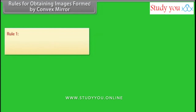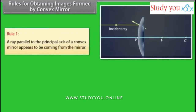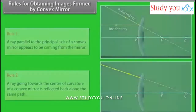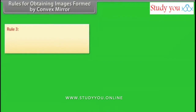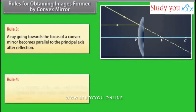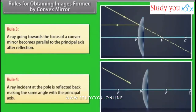Rules for obtaining images formed by convex mirrors: Rule 1: A ray parallel to the principal axis of a convex mirror appears to be coming from behind the mirror. Rule 2: A ray going towards the center of curvature of a convex mirror is reflected back along the same path. Rule 3: A ray going towards the focus of a convex mirror becomes parallel to the principal axis after reflection. Rule 4: A ray incident at the pole is reflected back making the same angle with the principal axis.